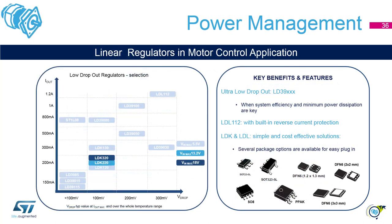Linear regulators can be selected by browsing datasheets or using the app for Android and iPhone. By entering some main parameters it helps you choose the right linear regulator. If system efficiency is important use the ultra-low dropout LD39XX series. To protect against reverse current use LDL112. If you need an economic and simple approach use LDK or LDL series.